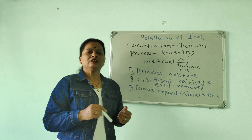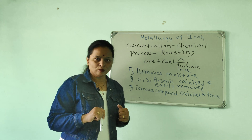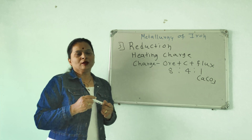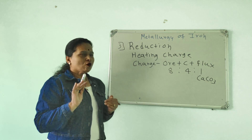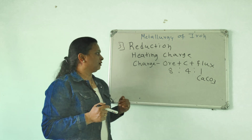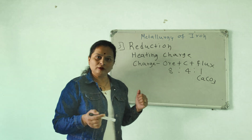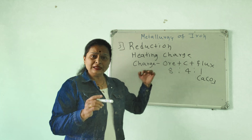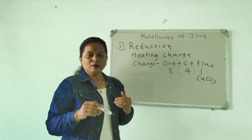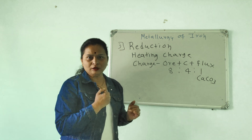In the hematite ore reduction, the melting process takes place in a blast furnace. The hematite ore is in oxide form, and we need to reduce it. Carbon — 8 parts — acts as a reducing agent, which reduces the hematite ore oxide form.